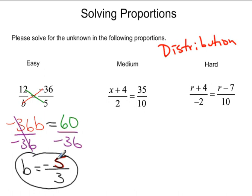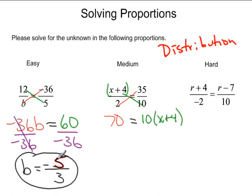Continuing on, we see that doing the multiplication of 2 times 35 in this problem is very straightforward — it's just going to be 70. And then when we get into the multiplication of 10 times x plus 4, we have to treat x plus 4 like it's a quantity. So instead of just trying to multiply it out right away, we should set it up with good writing so we know to just distribute. So it's 70 equals 10x plus 40.